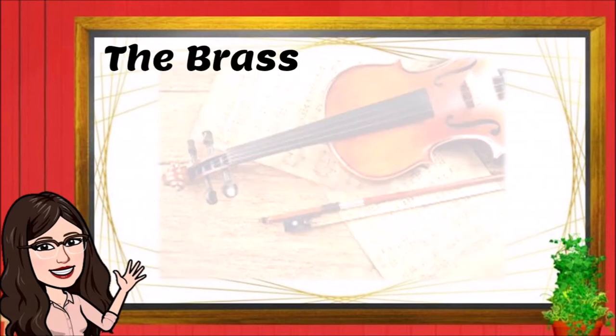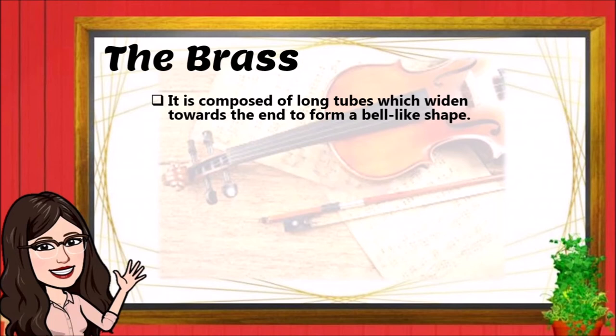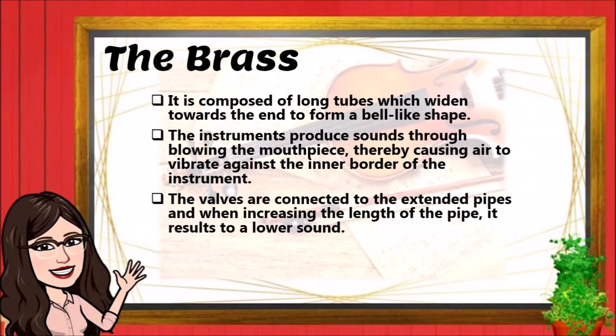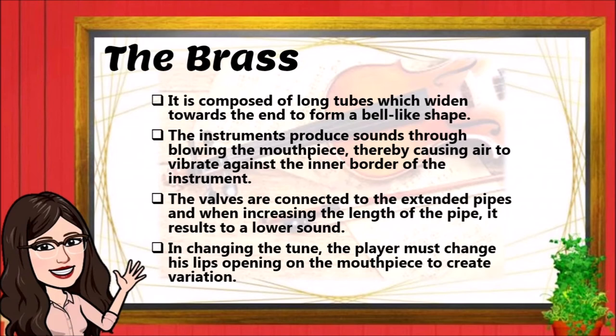Now let's move to brass instruments. Brass instruments are composed of long tubes that widen towards the end to form a bell-like shape. They produce sounds through blowing the mouthpiece, causing air to vibrate against the inner border of the instrument. The valves are connected to extended pipes, and increasing the length of the pipe results in a lower sound. To change the tune, the player must change the lip opening on the mouthpiece to create variation.